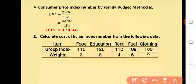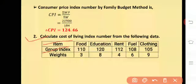Moving to the second question: calculate the cost of living index number from the following data. The data provides items with their group indices and corresponding weights.